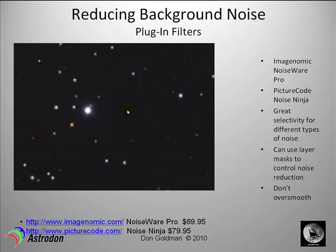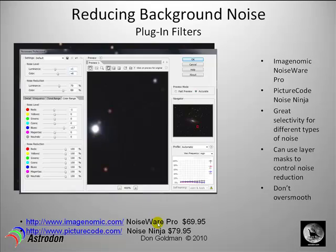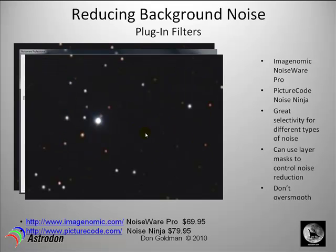Here again we have the two blue color splotches, and we're going to be using Noiseware Pro. It has a variety of settings that you'll have to learn, but once you learn how to use those, you'll see that those blue splotches go away and you're left with a very nice image. Noise Ninja works the same way — it's very specific, you can get reduction of background noise more in certain areas than others, and they're very customizable.